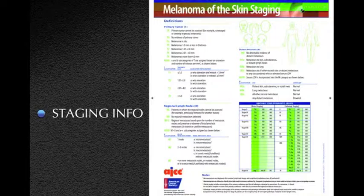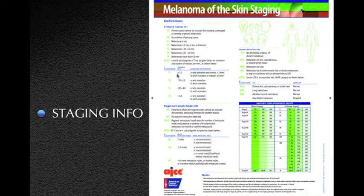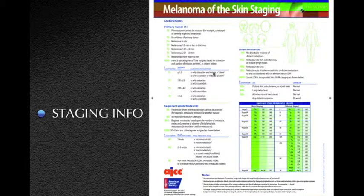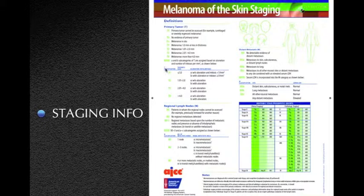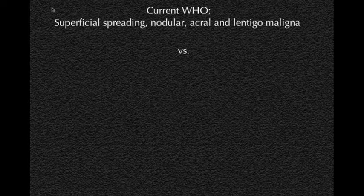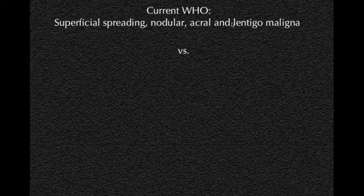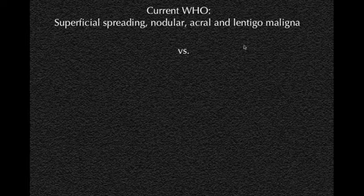Regarding the staging information, this has recently been changed, and the update here is that in case of the primary tumor, the T1 lesions are segregated into A and B categories depending on whether they have ulceration or mitosis. This primary tumor stage information is included in our reports. The current WHO classification characterizes superficial spreading type melanoma, acral melanoma, and lentigo maligna type melanoma.